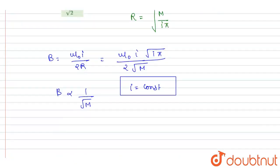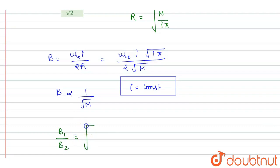And we want to find B1/B2. So B1/B2 will be equal to the square root of M2/M1. And since it is doubled, M2 is 2 times M1. That gives us square root of 2. And this will be the answer to this question.